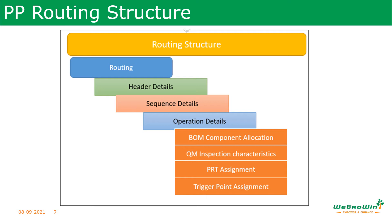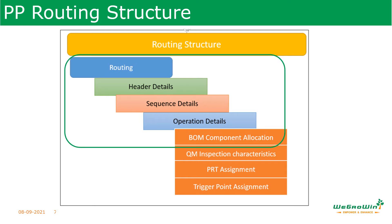In SAP production planning, the routing has different structural levels: the header, header details, sequence details, operation details, and BOM component allocations. In this course we will be discussing the header, sequence, operation details, and BOM components.